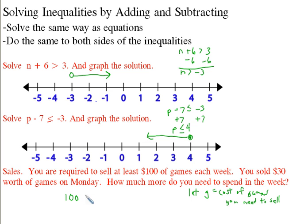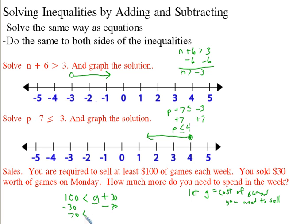So g plus 30 needs to be greater than or equal to 100. I subtract 30 from both sides and get 70. I need to sell at least $70 more worth of games. If I do that, everybody's happy and I'm done for the week.